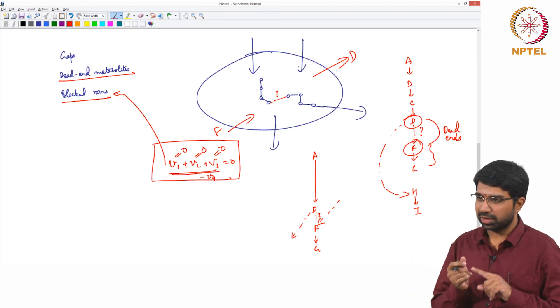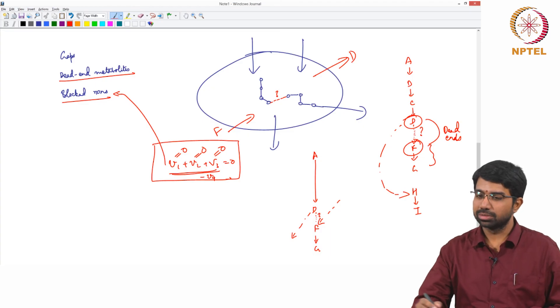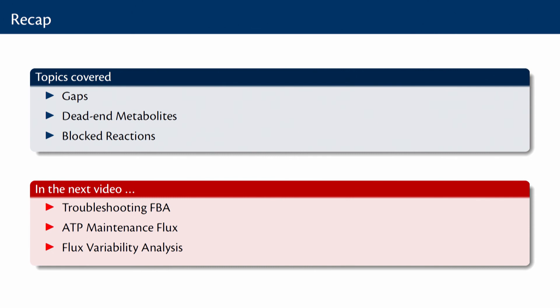So you now understand the concept of a gap, a blocked reaction and dead end metabolites and also how to put a band aid fix for dead end metabolites. So I hope in this video you got a good overview of what are the different types of gaps that can exist in metabolic networks. So either the knowledge gaps or potential model mistakes and so on as well as the concept of dead end metabolites and blocked reactions. In the next video, we will look at some more concepts related to troubleshooting FBA wherein we will also look at the ATP maintenance flux and this very interesting concept known as flux variability analysis.